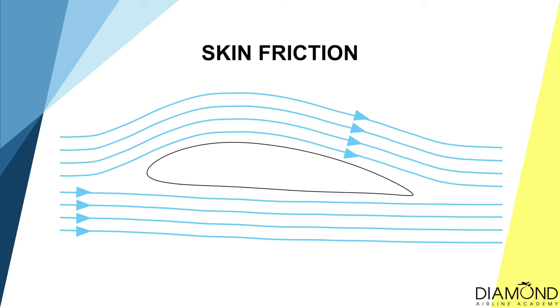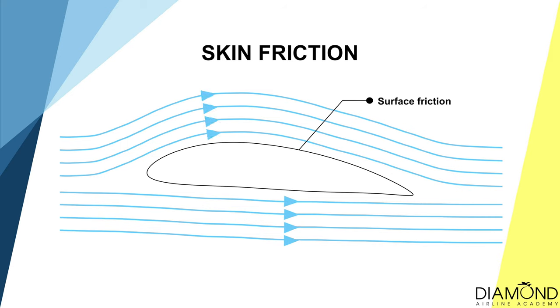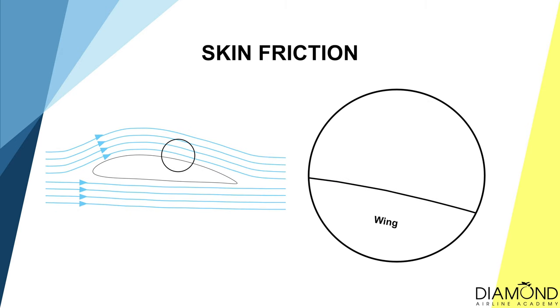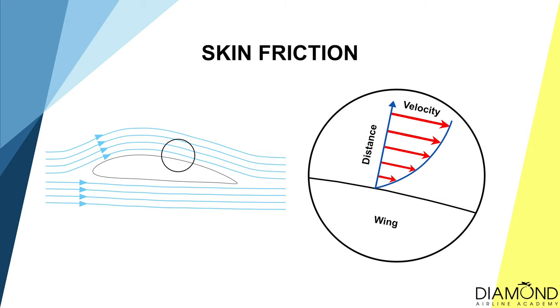To understand how a stall occurs, we first have to understand the relationship between the aerofoil and airflow. When a wing is flying through the air, air flows past the top and bottom of the aerofoil. Due to the skin friction of the wing, the air immediately surrounding the aerofoil gets a reduction in speed. The air closest to the aerofoil suffers more from skin friction and is therefore the slowest. The further away the air is from the aerofoil, the less skin friction it receives, so the faster the airflow speed.